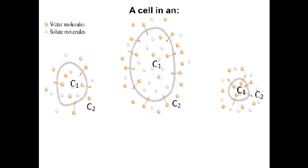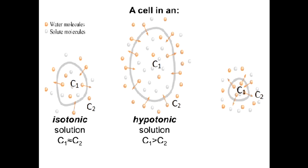To summarize: in an isotonic solution, the concentration inside and outside the cell are nearly equal, so water molecules move in and out in equal amounts — equilibrium. In a hypotonic solution, water molecules preferentially move into the cell, causing it to grow in volume. In a hypertonic solution, the concentration outside exceeds that inside, so water moves out of the cell and the cell shrinks.